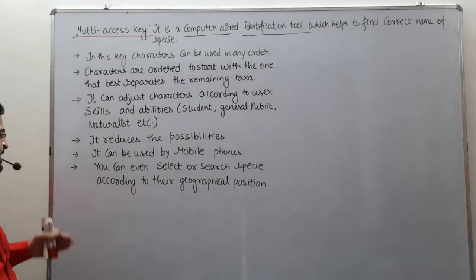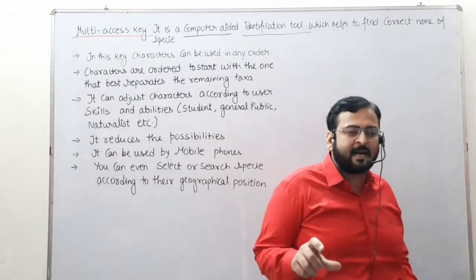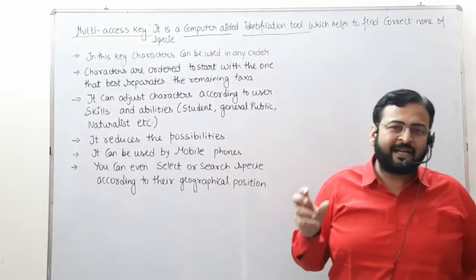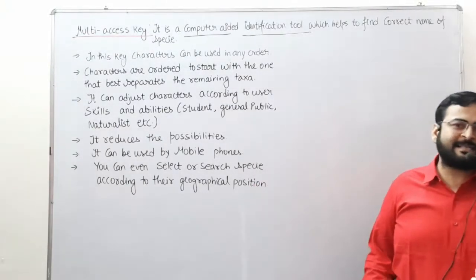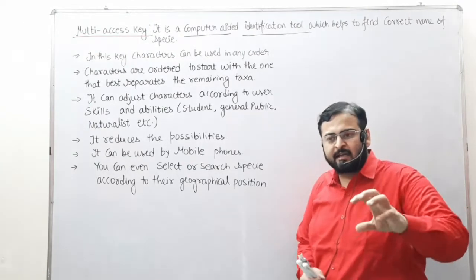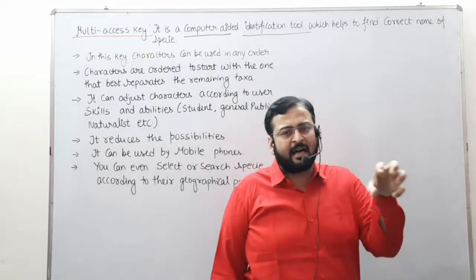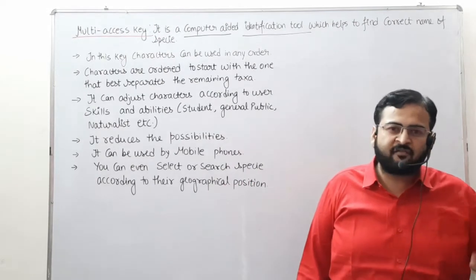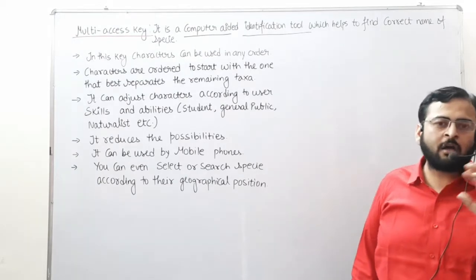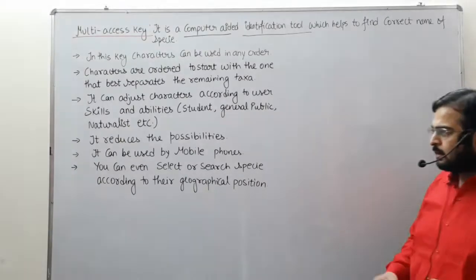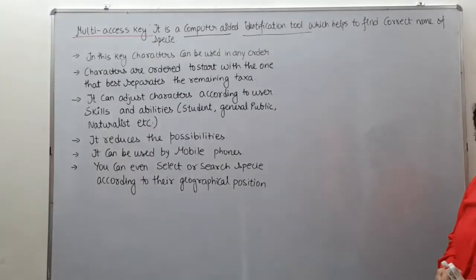You can also select or search species according to their geographical position. If you know the correct geographical coordinates of that area, you can enter them and find out about that species. For example, if you are standing at 32 degrees North latitude and enter the correct location into the software, it will tell you which trees and animals are present in your surroundings.